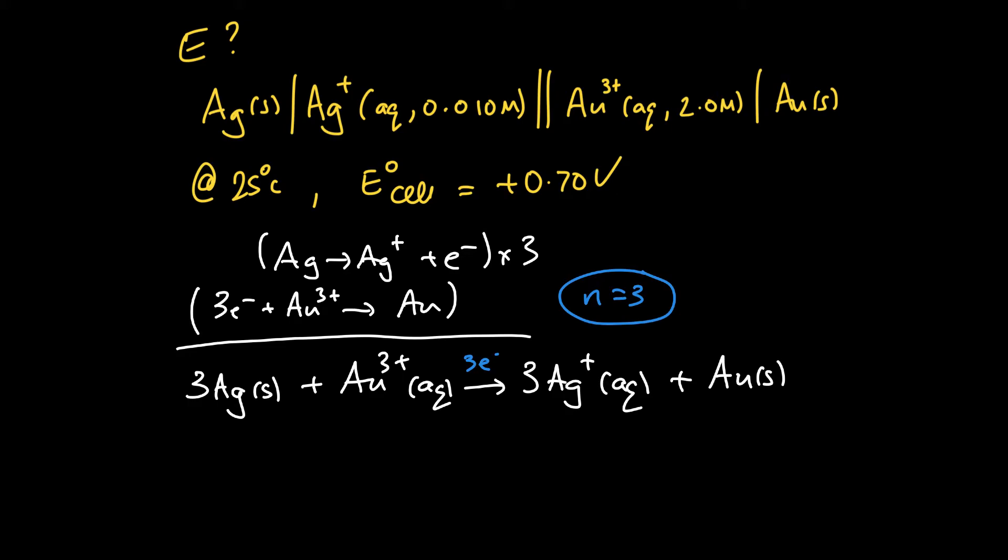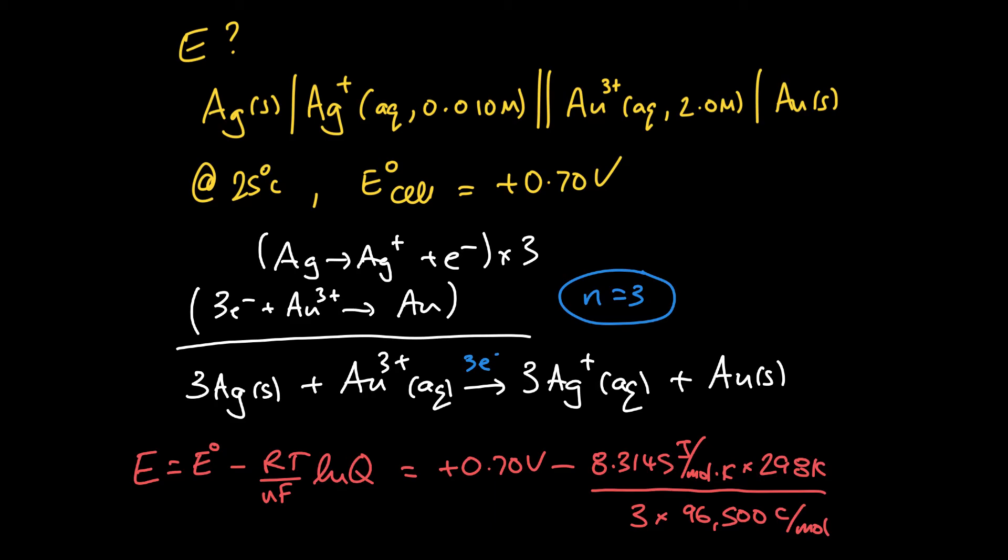So we plug it into the Nernst equation. So the Nernst equation says E is E standard minus RT over NF natural log of Q. So we can build that. And E standard was positive 0.7 volts minus R, so 8.3145 joules per mole Kelvin. T is 298 Kelvin. N is three. And F is 96,500, that's the Faraday, coulombs per mole.